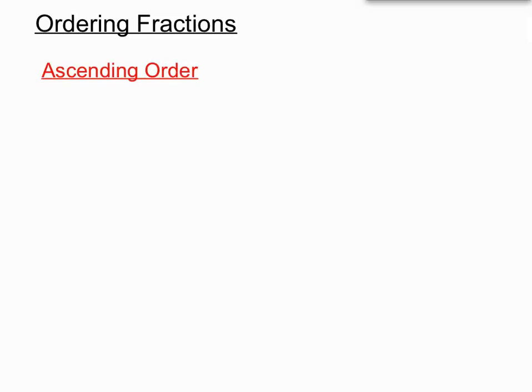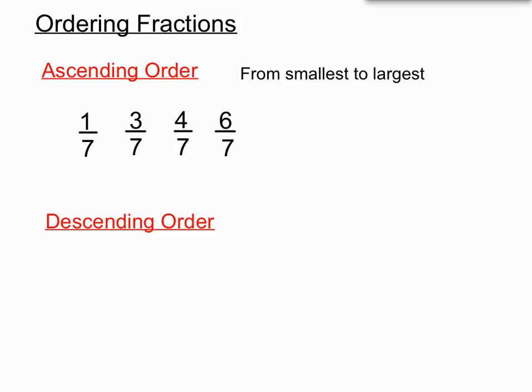When we put fractions in order, there's two main orders that we're asked to use. Ascending order is when the fractions are going from smallest to largest. This is pretty logical. We'll use fractions with all the same bottoms to make it easier. 1/7 is smallest, then we go 3/7, then 4/7, then 6/7. So the fractions are getting bigger as we go. The other way is descending order, and that's going from largest to smallest. So 9/10, then 7/10, then 3/10, then 1/10. They're going from big to small there.